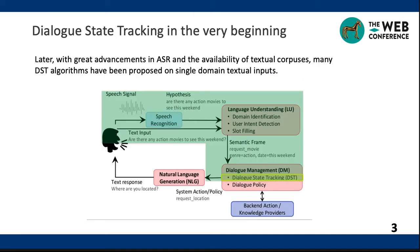Later, with great advancements in automatic speech recognition and the availability of textual corpora, many dialogue state tracking algorithms have been proposed on single-domain textual inputs. However, the methods developed for single-domain are hard to scale to multi-domain settings. The tracking problem becomes more complicated when multiple domains are involved, requiring models to be more accurate in finding evidence for slot value prediction and more robust in handling correlations among various slots.